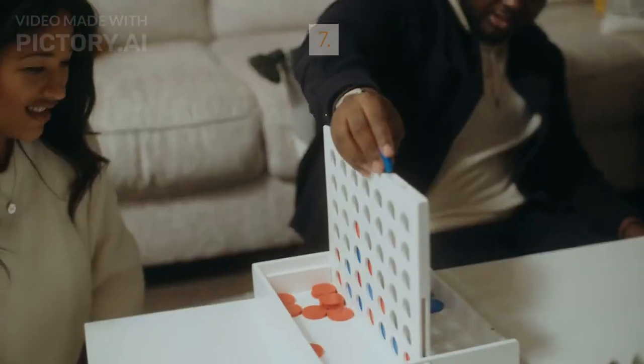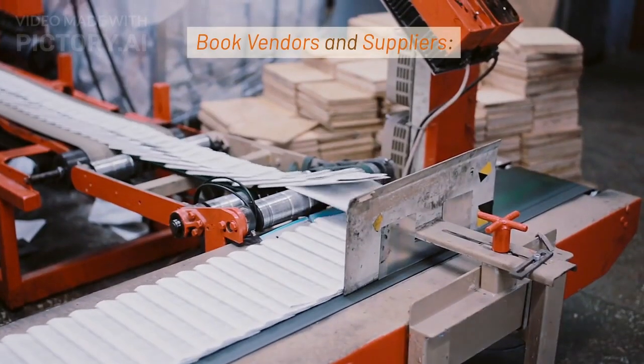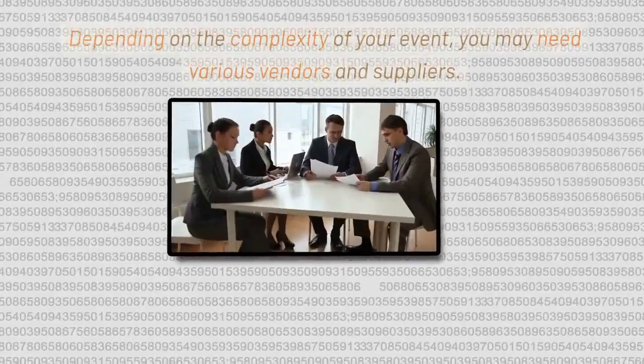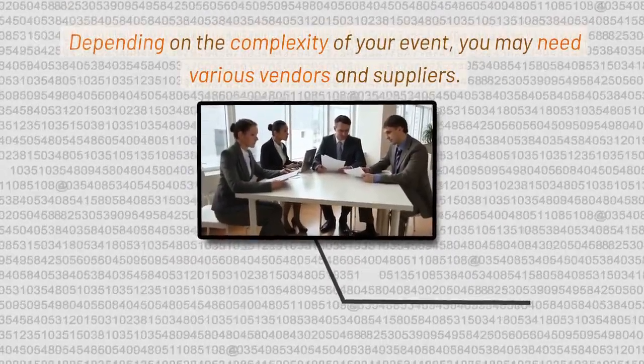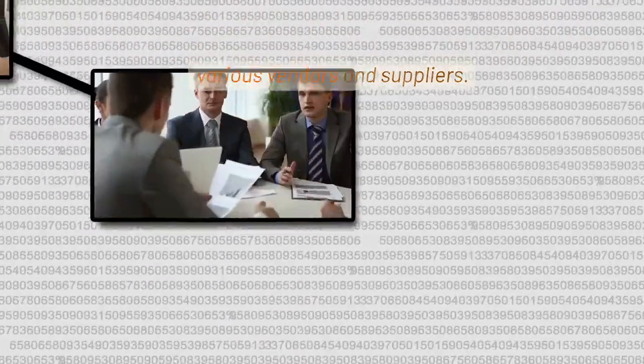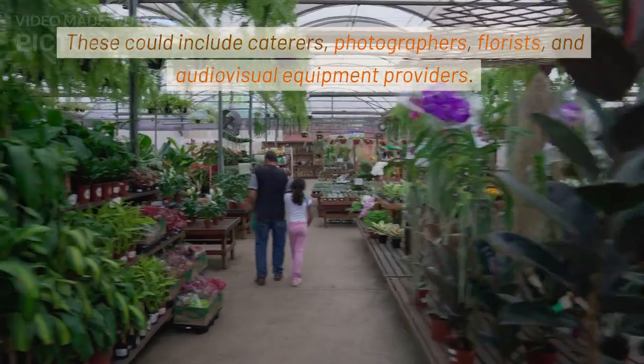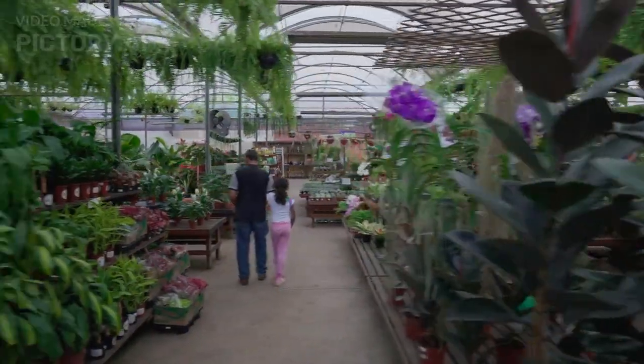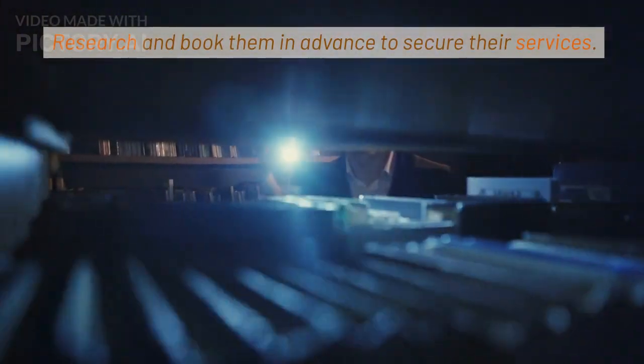This is where your creativity can truly shine. 7. Book vendors and suppliers. Depending on the complexity of your event, you may need various vendors and suppliers. These could include caterers, photographers, florists, and audio-visual equipment providers. Research and book them in advance to secure their services.